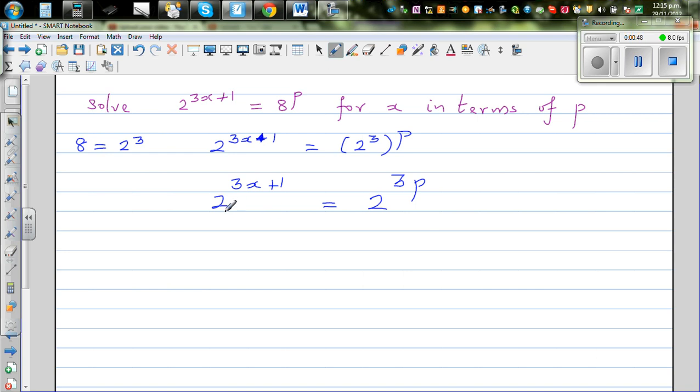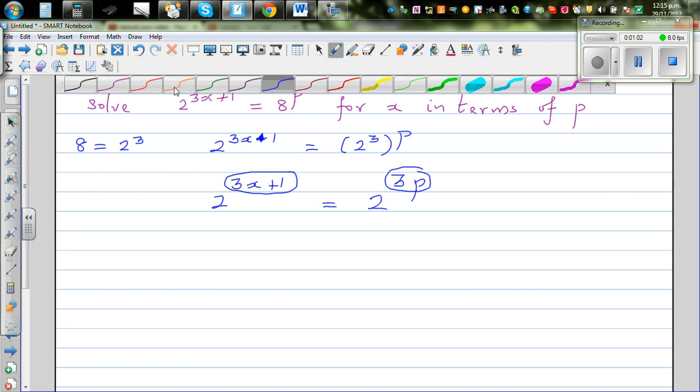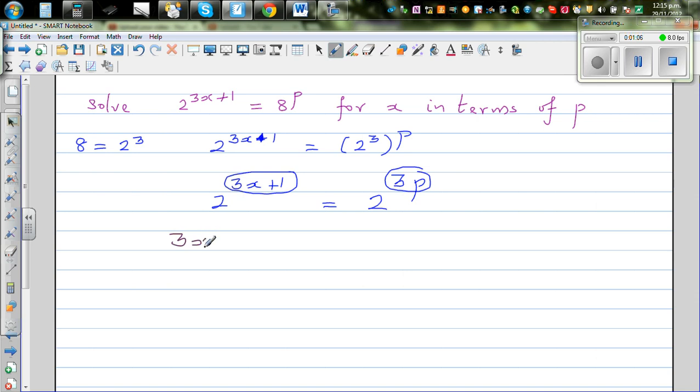So here on the left hand side you've got 2 raised to 3x plus 1 and on the right hand side you've got 2 raised to 3p. So as the bases are the same, you can compare the indices. So 3x plus 1 is equal to 3p.